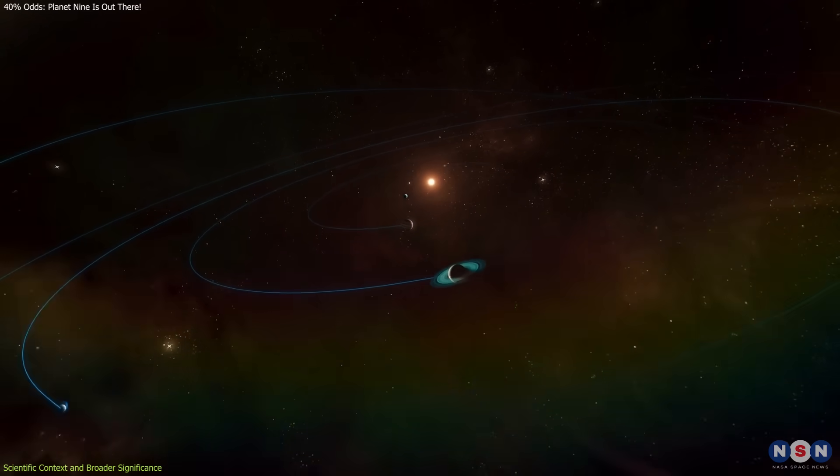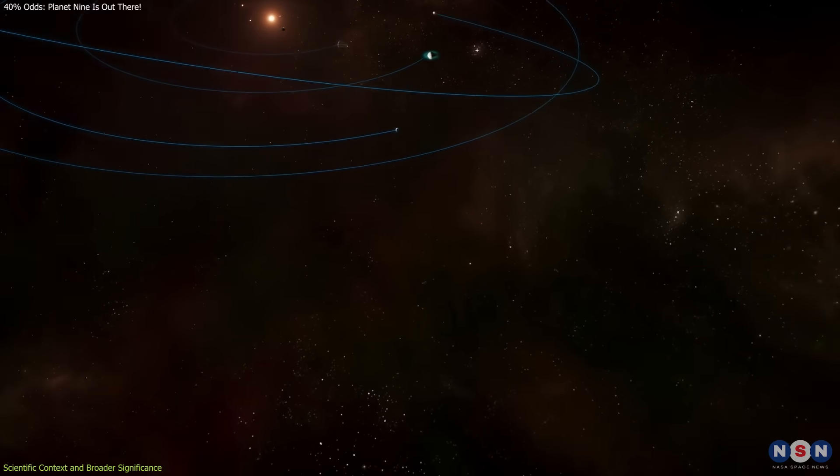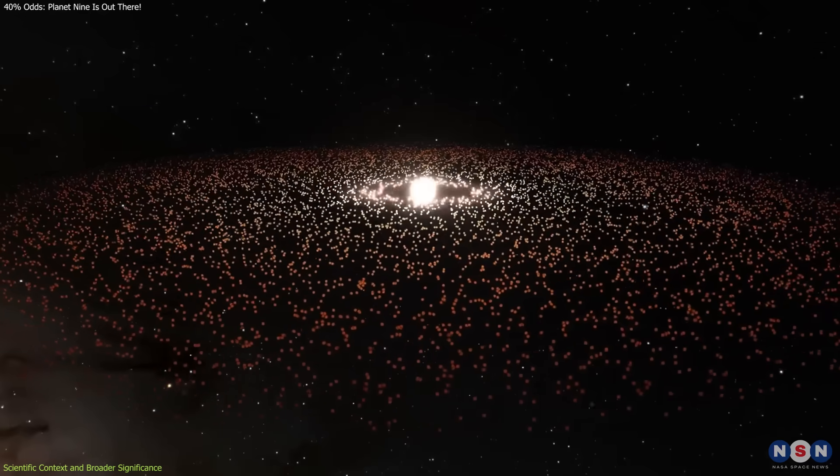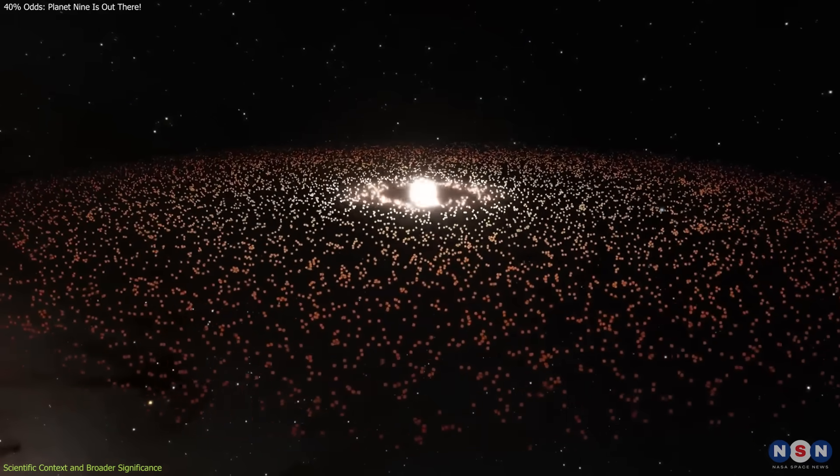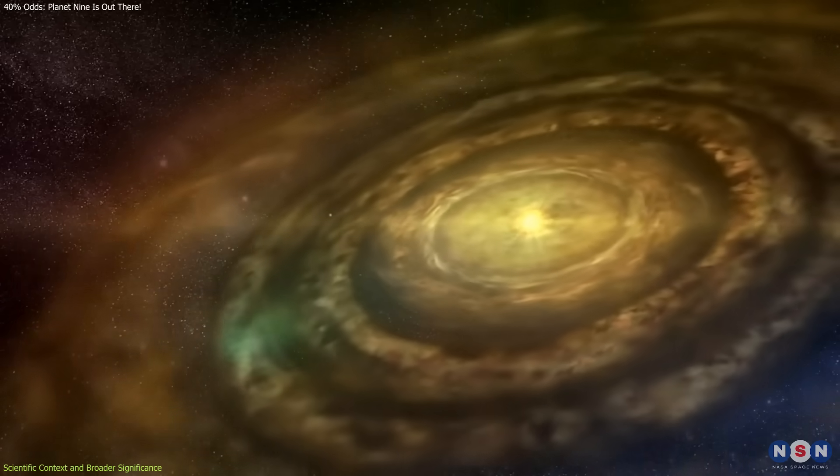Moreover, these results reshape how we think about the outer edges of planetary systems. Traditional models of planet formation focus on proto-planetary disks that usually span up to about 100 AU.